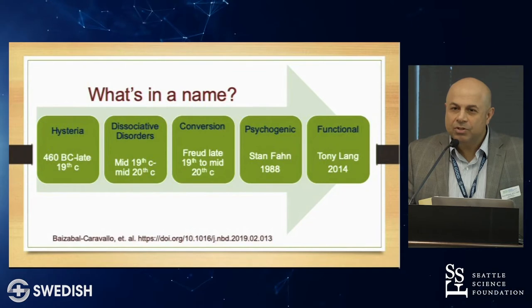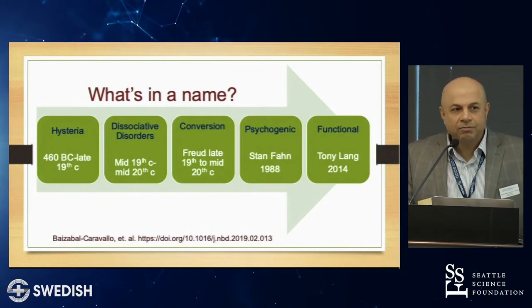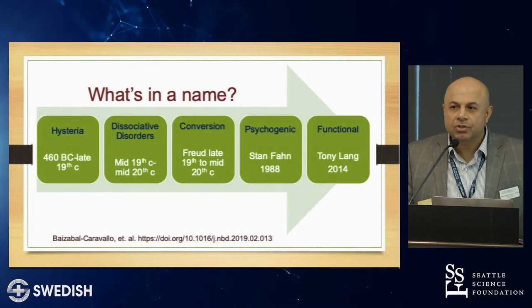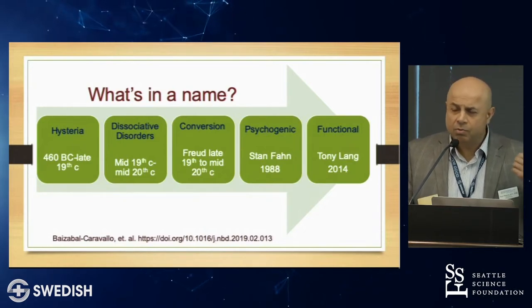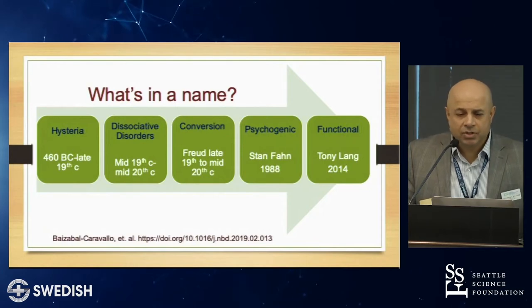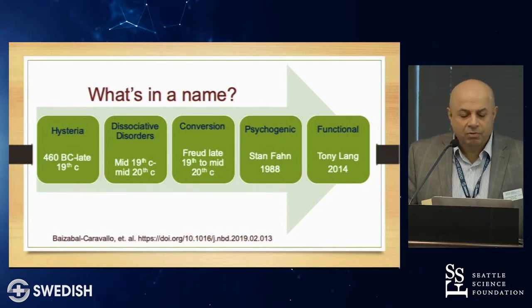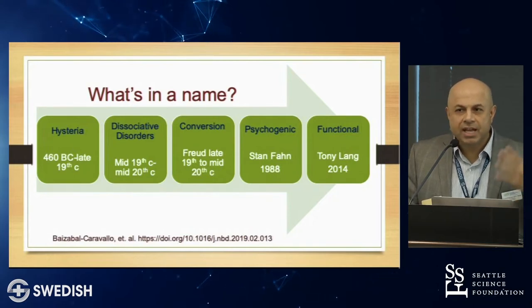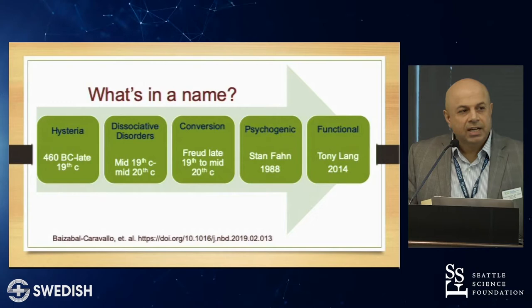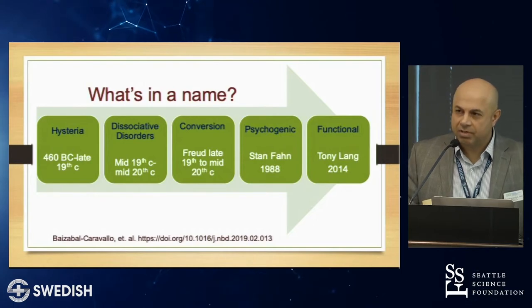Historically, functional movement disorders are not new. They are a subset of functional neurological disorders, and looking back in Western medicine, they've been described since the B.C. to the A.D. era. They've been prevalent for a very long time, but they've been called different things.